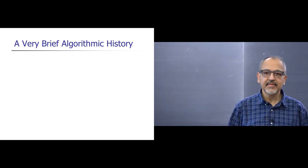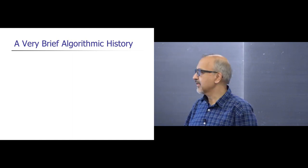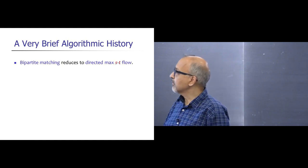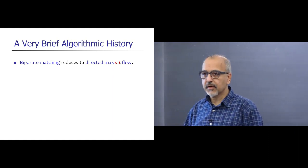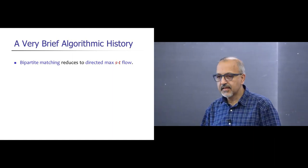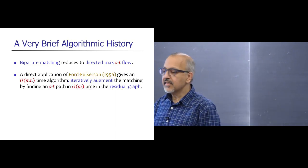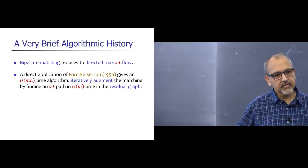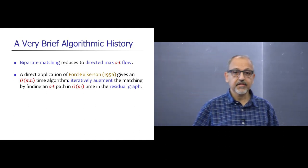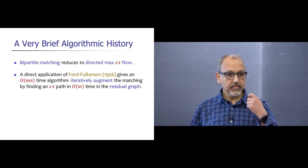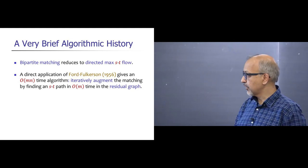This problem has a really long and rich history. The textbook algorithms for bipartite matching are based on the observation that the problem can be reduced to a directed max flow computation. Using this connection, you can get an O(mn) time algorithm: as long as you do not have a maximum matching, you find an augmenting path in the residual flow network in O(m) time, increasing the matching size by one. Since there can be at most n augmentations, this gives an O(mn) time algorithm.